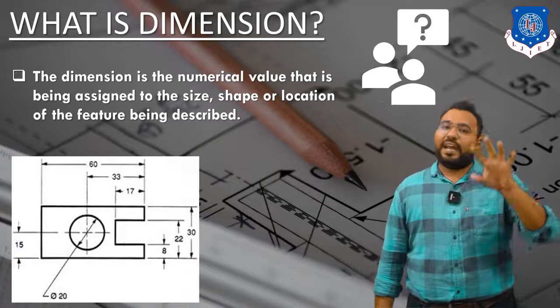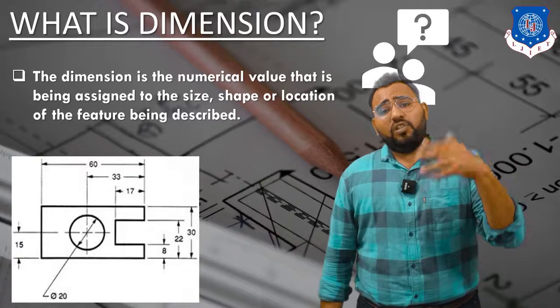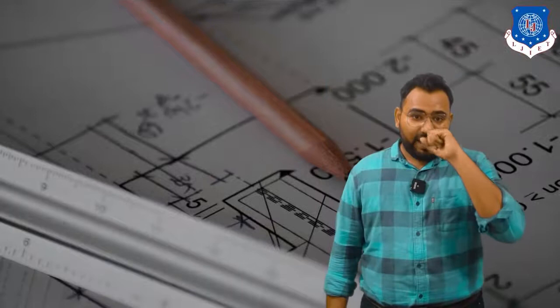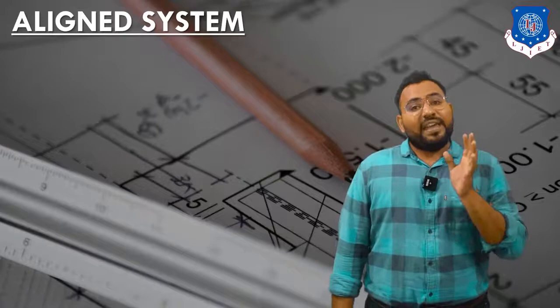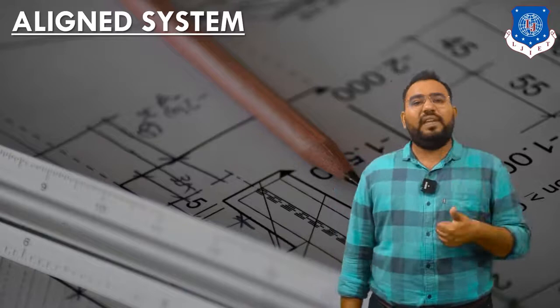So from this figure we confirmed: dimension is a numerical value; it is assigned to the size or shape; and it is also assigned to show the location of the features being described. Now we are going to see the second topic: methods of dimensioning. There are mainly two types — aligned system and unidirectional system.